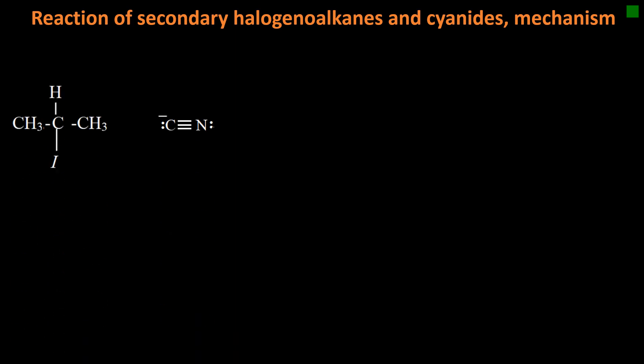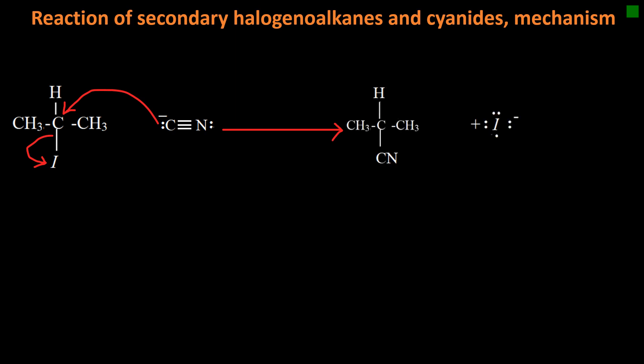Let us start with SN2. The nucleophile attacks nucleophilically on the carbon, and the electrons repel the electrons of the bond between carbon and iodine, which forms an iodide ion and a nitrile molecule. Because this is the only step in this mechanism and it involves two chemical species, this is an SN2 mechanism, or bimolecular nucleophilic substitution.